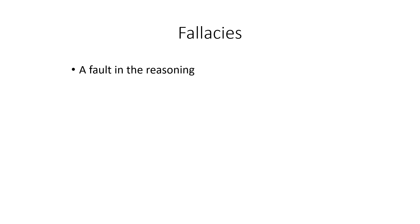When an argument goes wrong in a specific kind of way, we call it a fallacy. A fallacy means just a fault in the reasoning. So, whenever there's something that's gone wrong in an argument specific to making the argument invalid, this is called a fallacy.